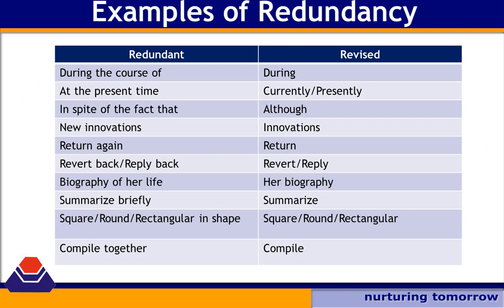Here are more examples of redundant phrases. 'During the course of' simply means 'during' — so instead of four words, we use one. 'At the present time, I am pursuing BTEC' can be written as 'Currently, I am pursuing BTEC' — one word instead of four to mean the same thing. Similarly, 'compile together' is redundant because 'compile' already means to bring things together, so we simply write 'compile.'